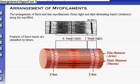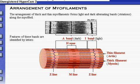Each I-band is bisected by a zigzag line called the Z-line. The Z-line is actually a protein disc which anchors the thin filaments and connects adjacent myofibrils. In the middle of each A-band, a lighter stripe appears called the H-zone, corresponding to the region between the thin filaments. The width of the H-zone varies depending on the degree of muscle contraction — it is widest when the muscle is relaxed and stretched. The M-line, located in the center of the H-zone, consists of protein fibers that connect neighboring thick filaments.